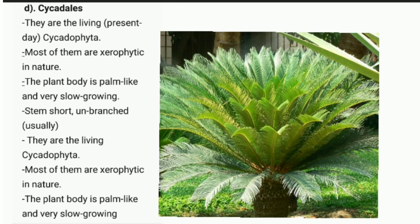The fourth order of class Cycadopsida is Cycadales — the living Cycadophyta. Most of them are xerophytes, meaning they can survive with less water. The plant body is palm-like and very slow-growing. The stem is short and unbranched. Examples include Cycas revoluta, Cycas beddomei, and Cycas pectinata.